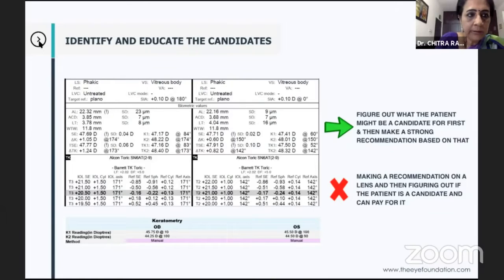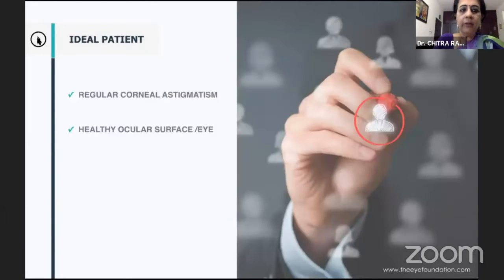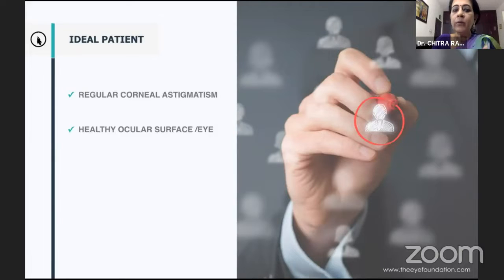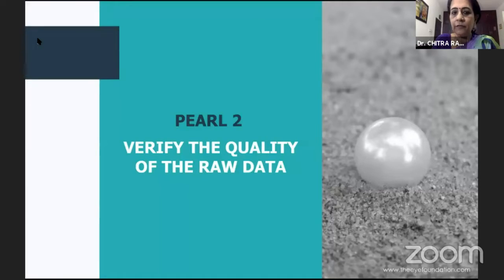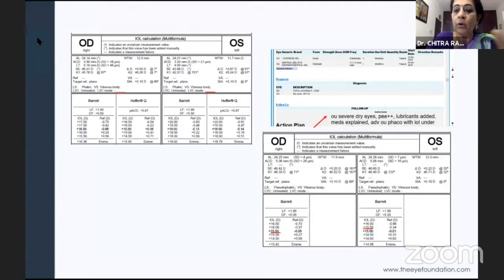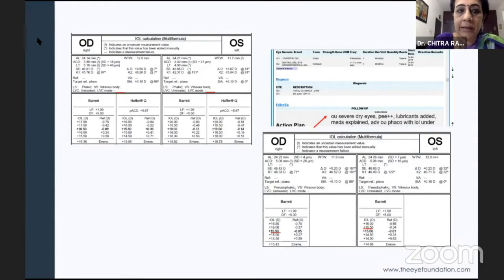We also need to know whether it's a regular corneal astigmatism and whether the patient has a healthy ocular surface — that's important. The second thing is to verify the raw data. Here, if you look carefully, the patient has two diopters of astigmatism in the left eye and 0.5 in the right eye.